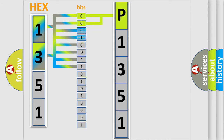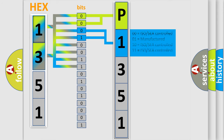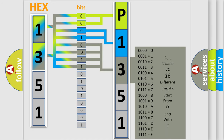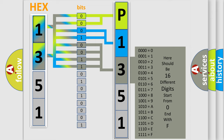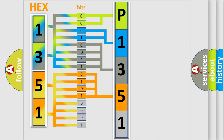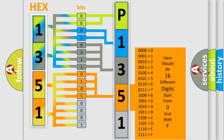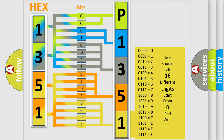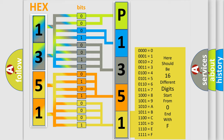The next two bits determine the second character. The last bits of the first byte define the third character of the code. The second byte is composed of a combination of eight bits. The first four bits determine the fourth character of the code, and the combination of the last four bits defines the fifth character. A single byte conceals 256 possible combinations.